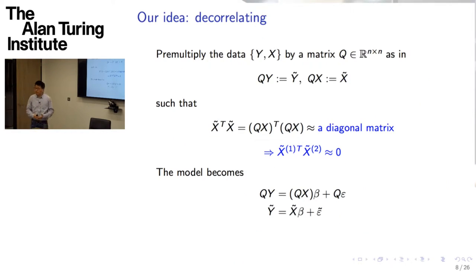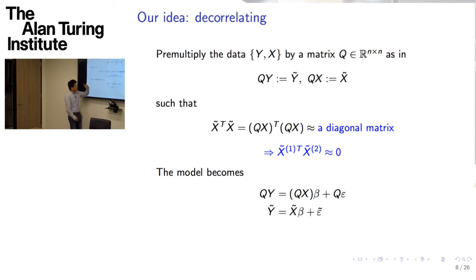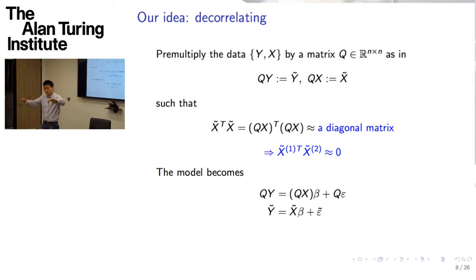The idea is to find some matrix Q, which is n by n, and pre-multiply the data by this Q matrix such that the resulting X̃ matrix satisfies X̃ᵀX̃ = I — an identity matrix. I pre-multiply both y and X by this Q, getting ỹ and X̃, and if X̃ᵀX̃ is an identity matrix, then distributing features onto different machines yields unbiased estimators on each machine, and I can divide my data across as many machines as I like.